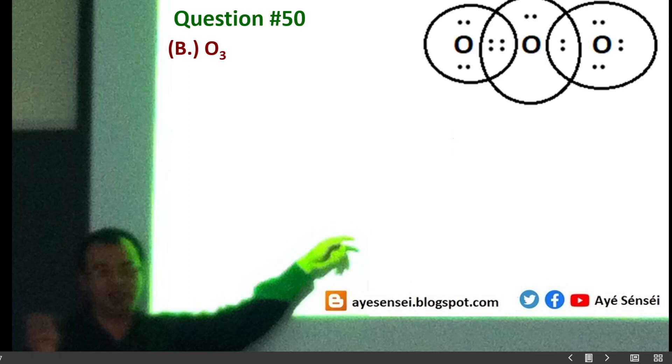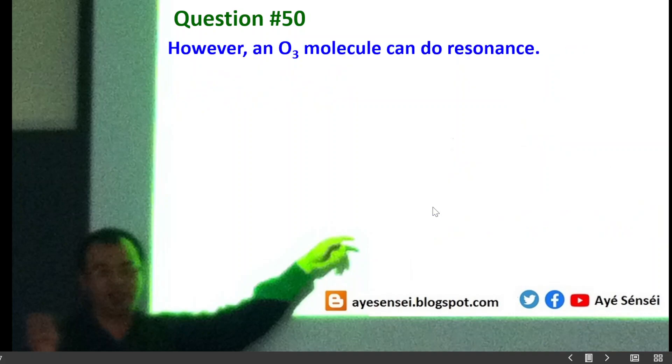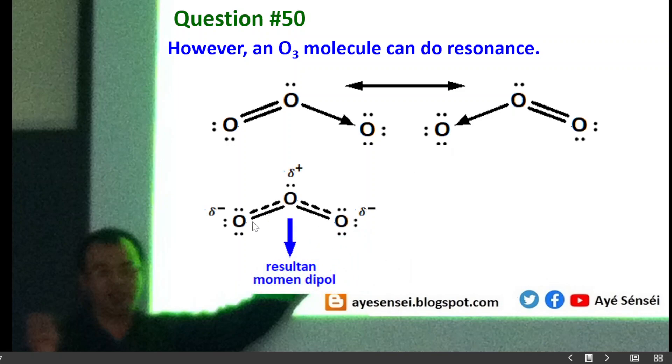Next is ozone. So this is the Lewis structure. The hybridization for central atom is sp2, and then this is when we draw the 2D structure. So ozone molecule can do a resonance, so it can be drawn like this. So they try to do stabilization, but as you can see here the bond order is 1.5, but still they have the resultant of the dipole moment.